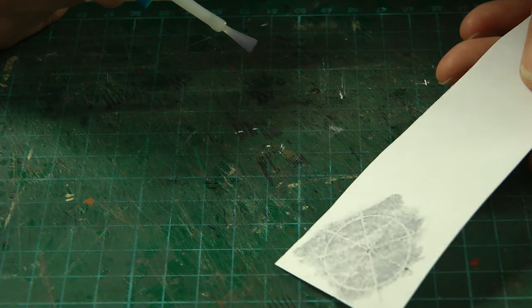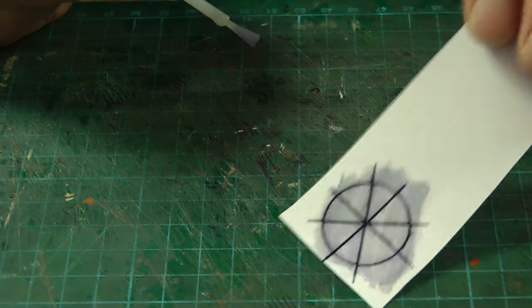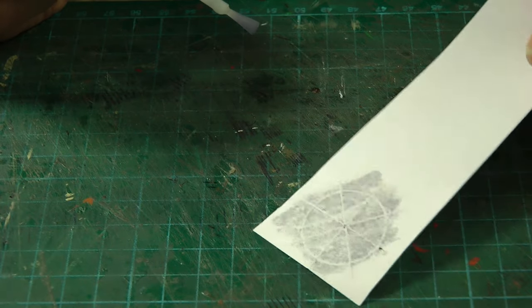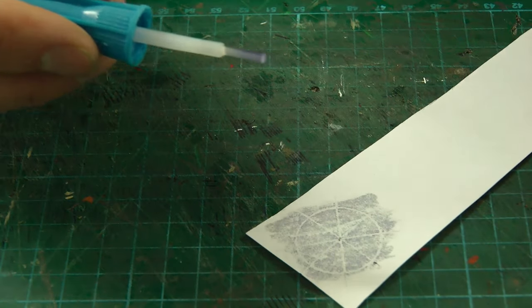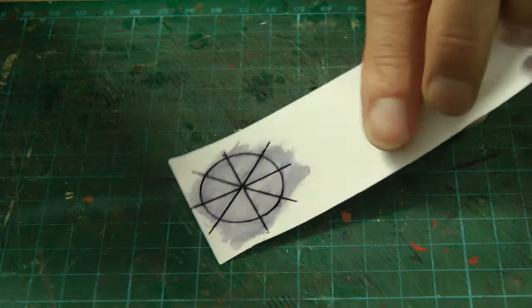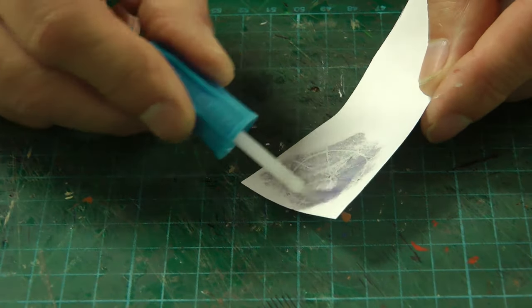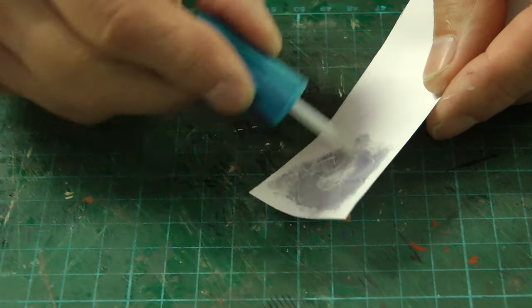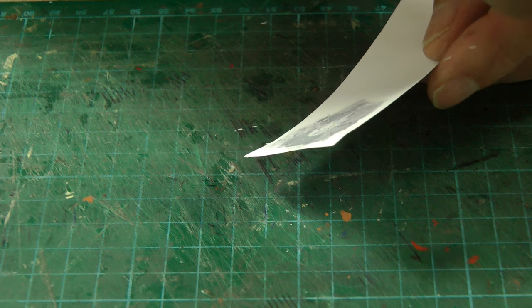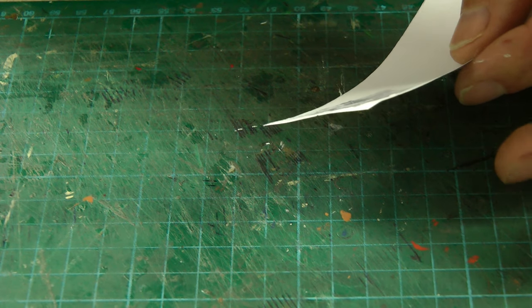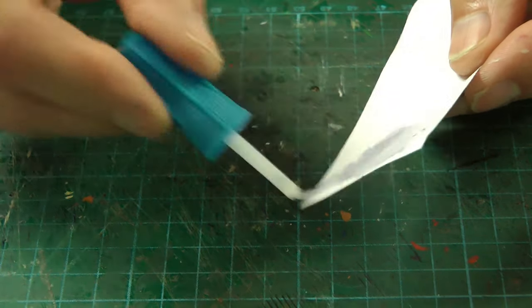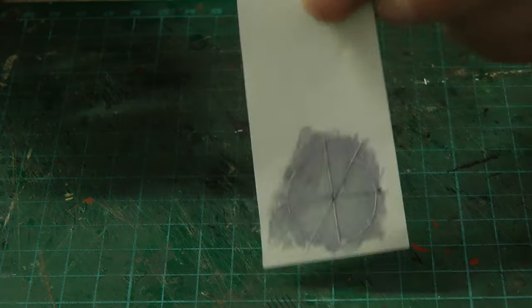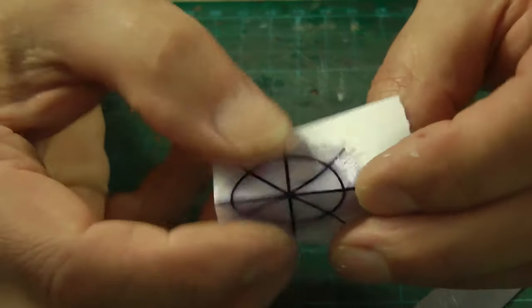Not worried if the ink runs, just want to make sure that we can still see the lines and also make sure that the super glue is going to penetrate the paper. Doesn't take long for the super glue to dry on paper. So we shall let this dry. If you're doing this, make sure you've got a window open.